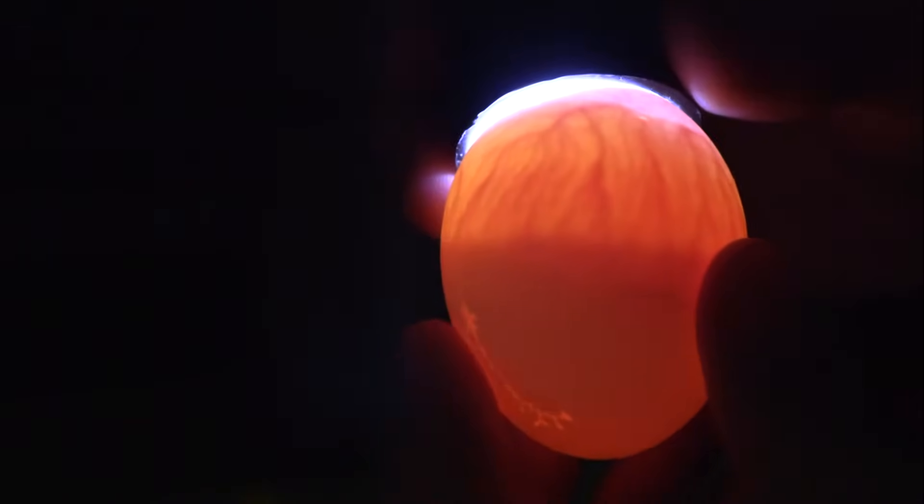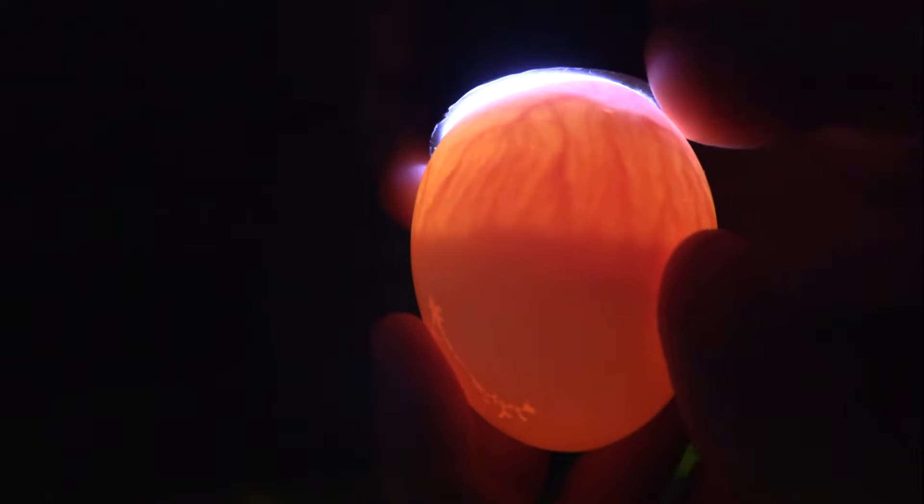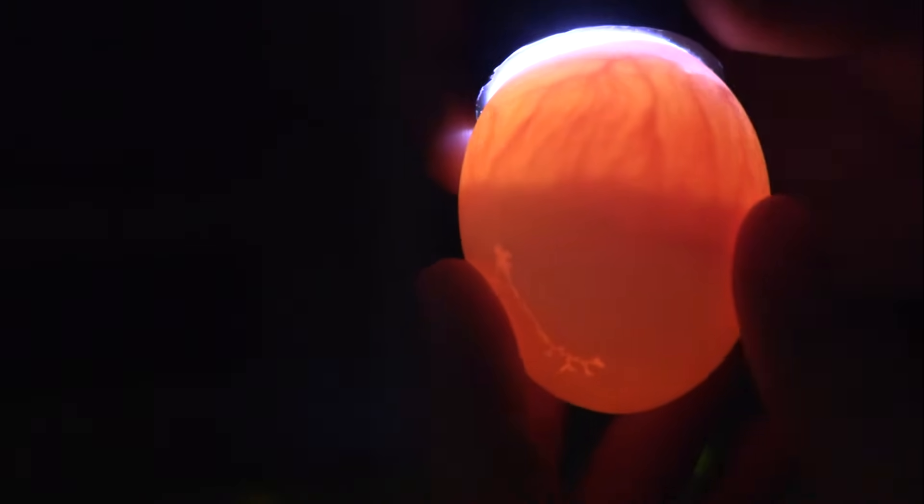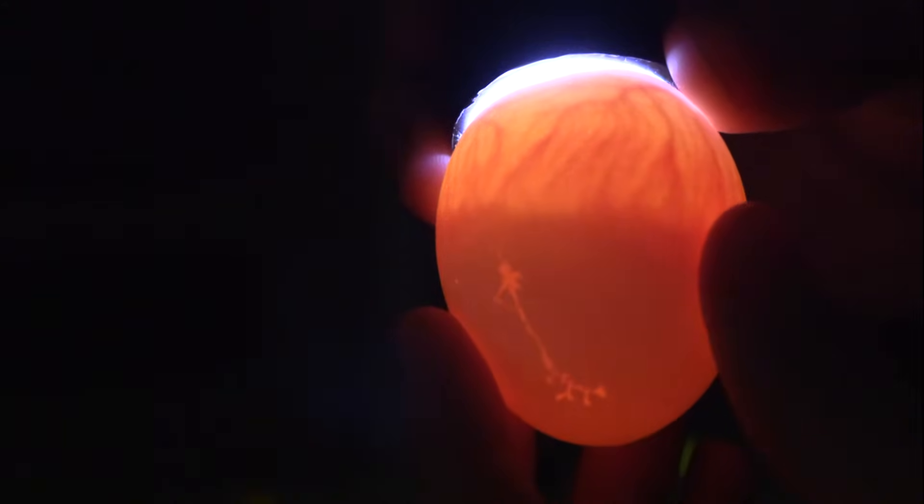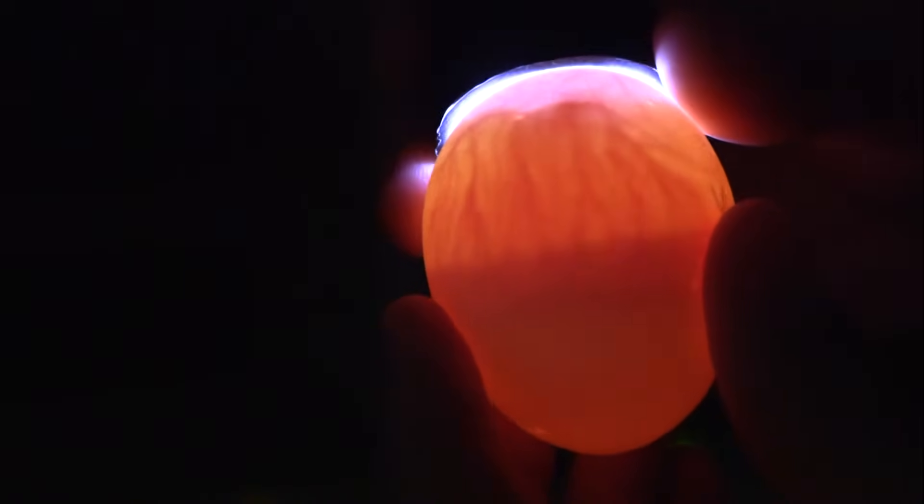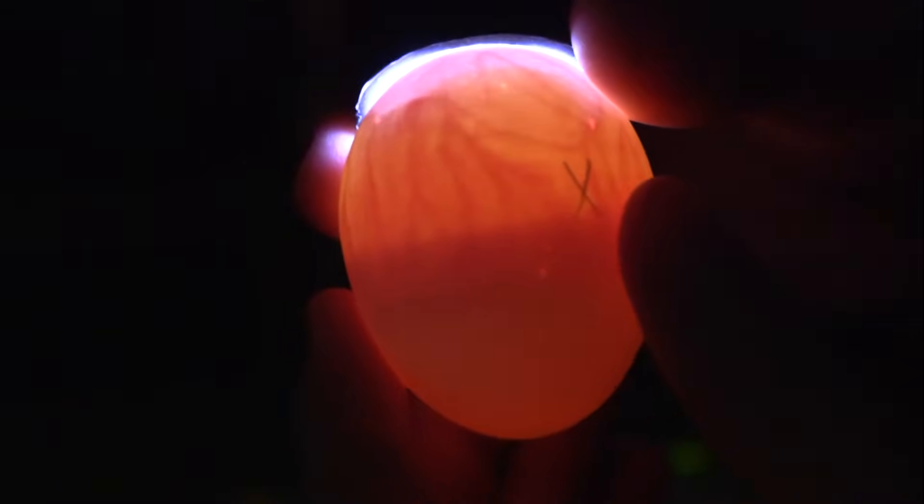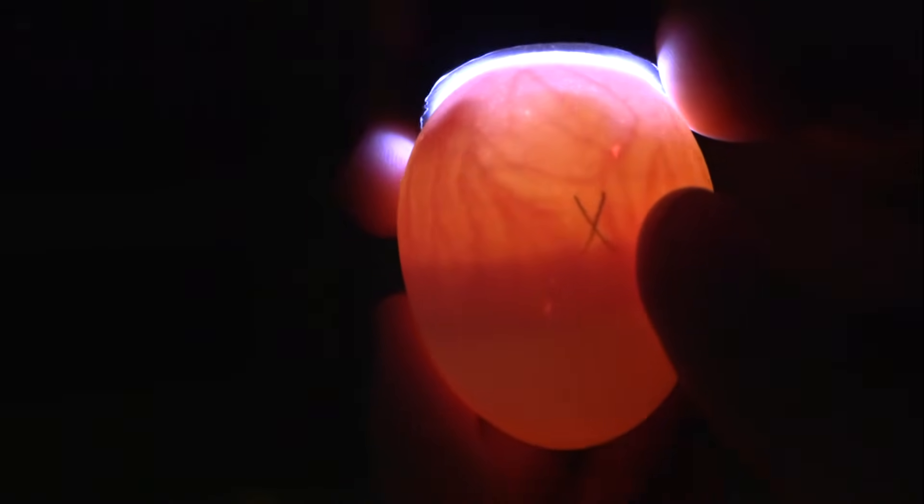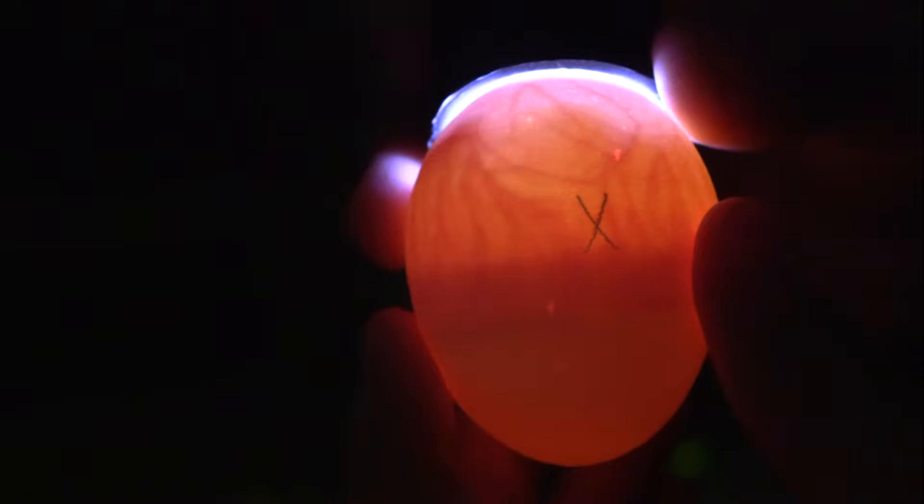Throughout the egg connecting the embryo to the yolk and albumin or egg white are red spider web looking blood vessels and veins. Those are responsible for absorbing the nutrients from the yolk and albumin throughout the development process of the embryo.